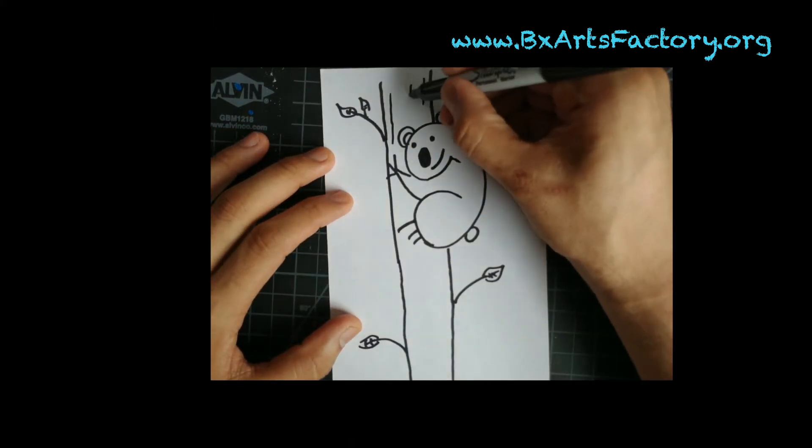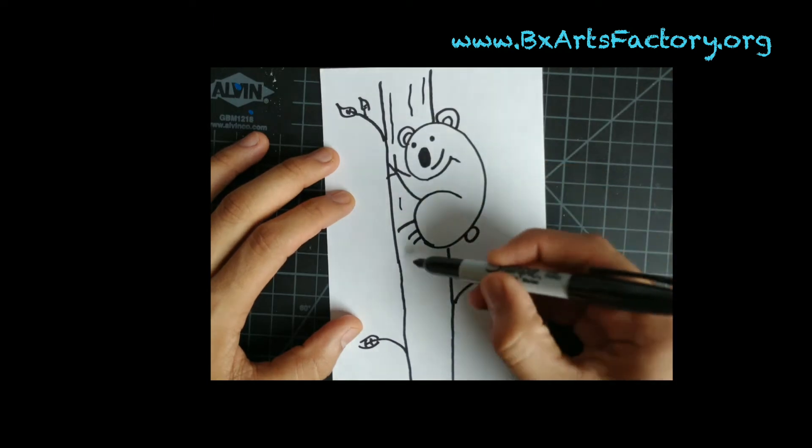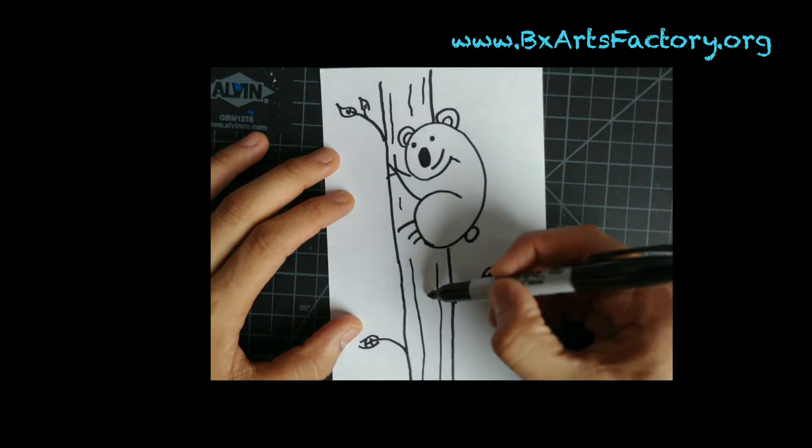Once you have this part down you can start adding some details. Let's put some lines, some slightly wavy lines coming up and down our tree. This gives it a look of bark.